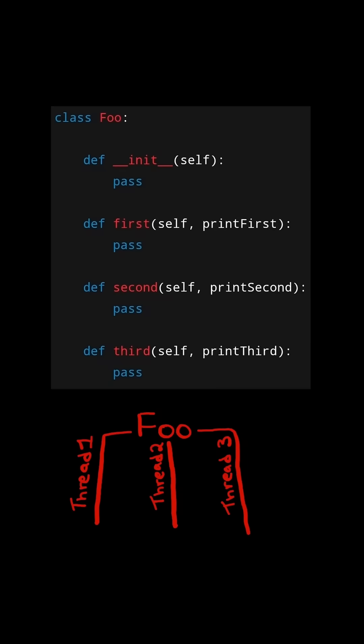we are given an instance of Foo. The same instance will be passed to three different threads. Thread one will call the first method, thread two will call the second method, and thread three will call the third method.